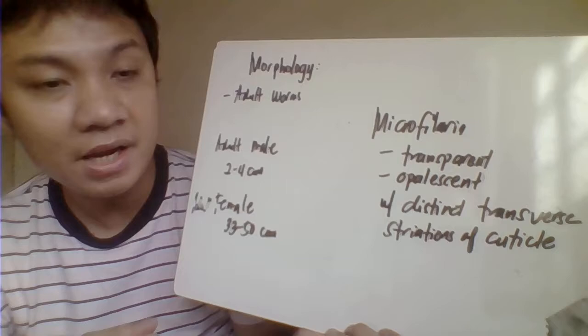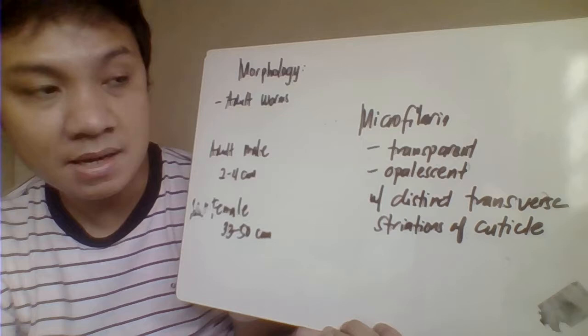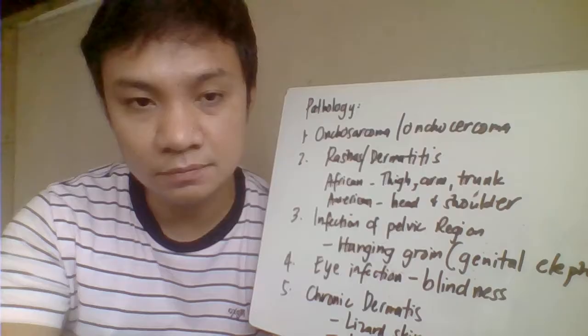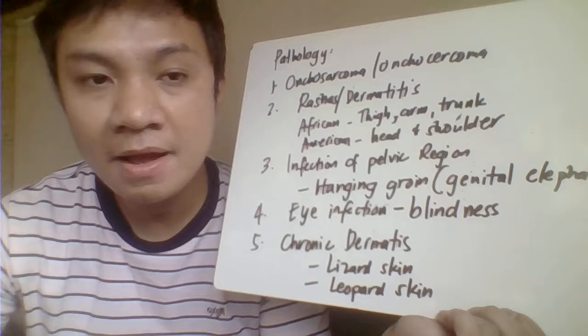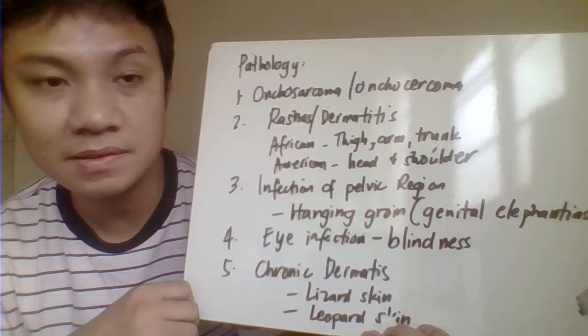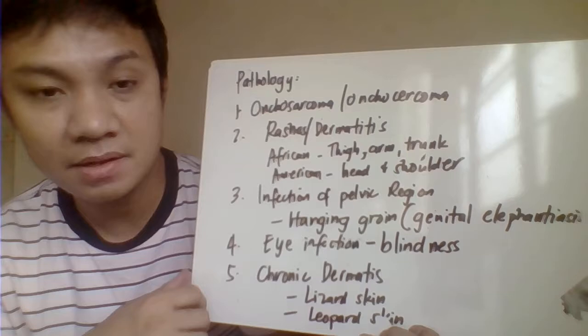For the microfilaria, we describe this one as transparent and opalescent, with distinct transverse striations of the cuticle. An additional note for the microfilaria of Onchocerca volvulus: the tail end does not have a sheath — this is an unsheathed species. Also, the microfilaria cannot be recovered in your peripheral blood smear.